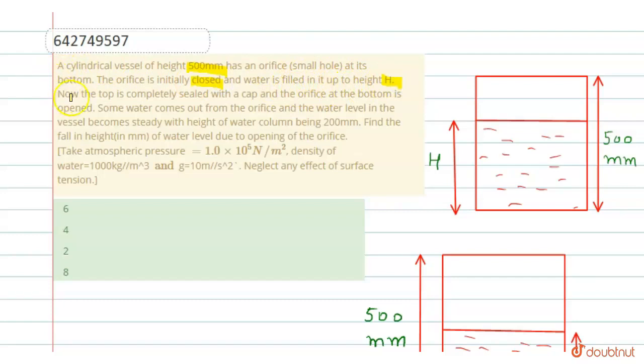Now the top is completely sealed with a cap and the orifice at the bottom is opened. Some water comes out from the orifice and the water level in the vessel becomes steady with the height of water column being 200 mm. Find the fall in height of water level due to opening of the orifice.